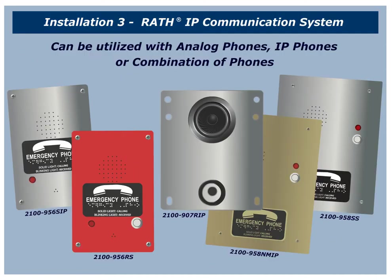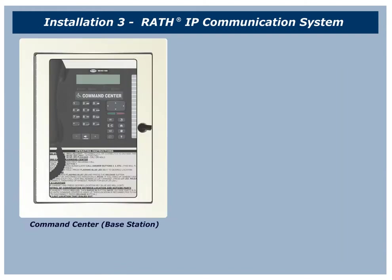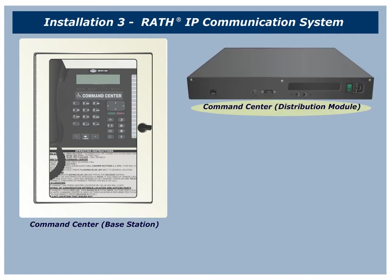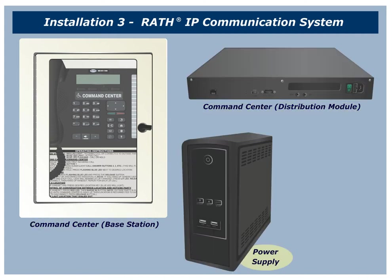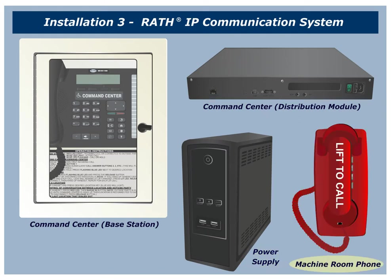Installation number 3: IP Communication System. The last type of installation is a complete IP communication system. You can utilize this system with analog phones, IP phones, or a combination of the two. The system normally includes a command center base station with a distribution module, a power supply, and phones in each machine room.